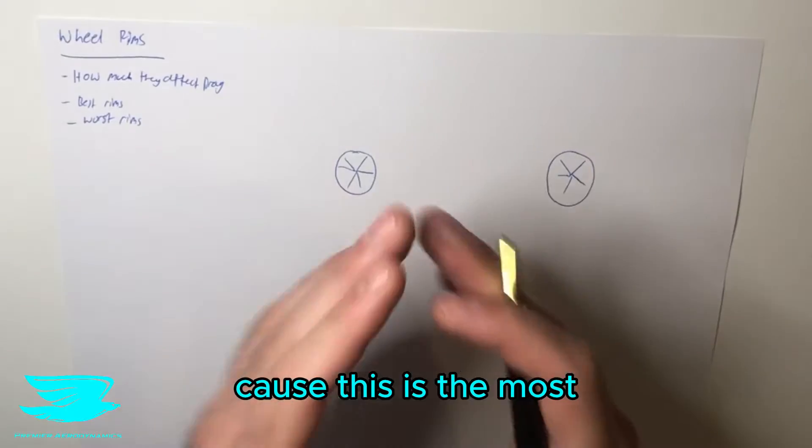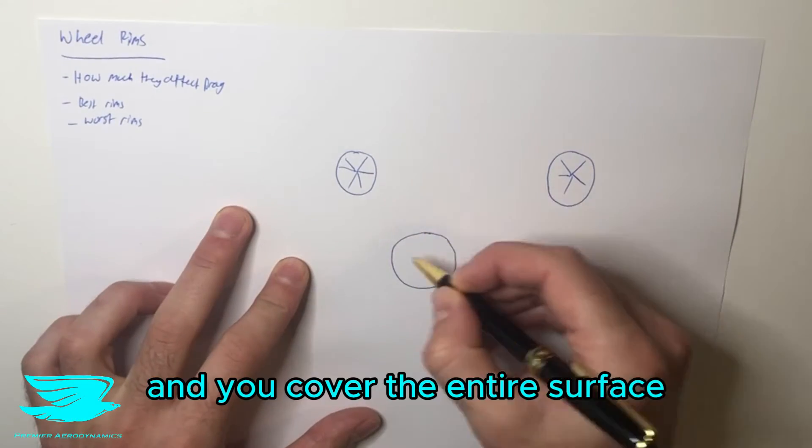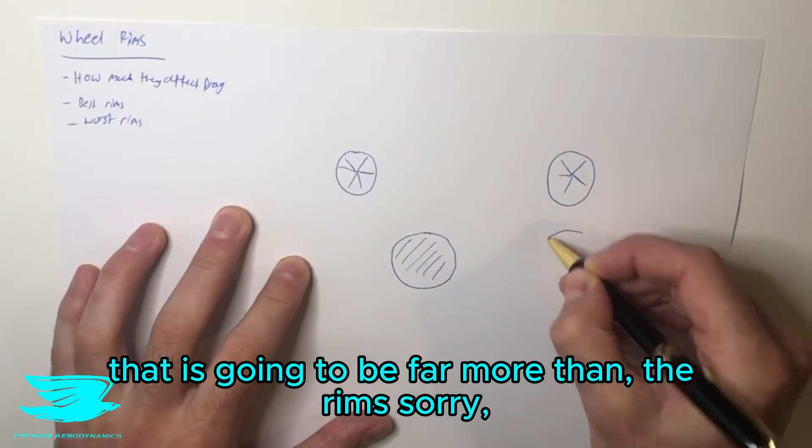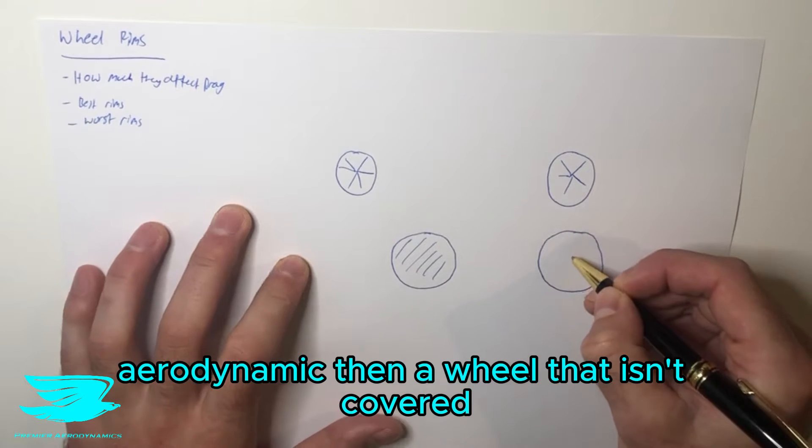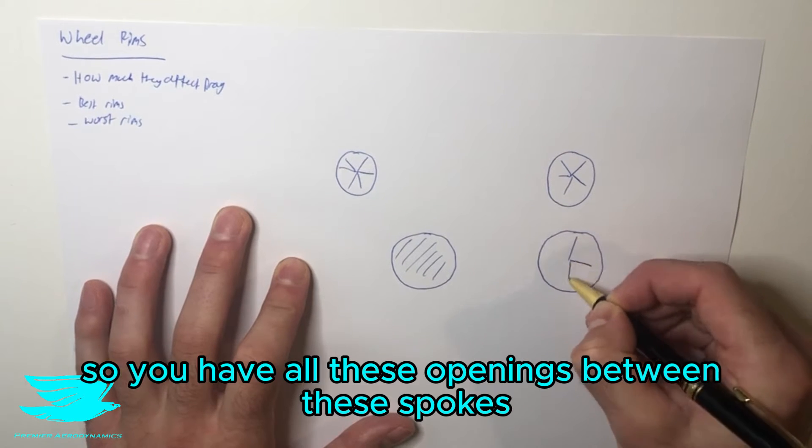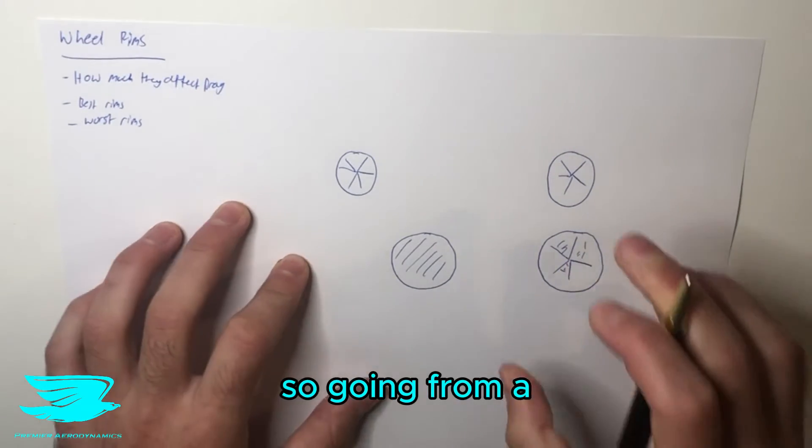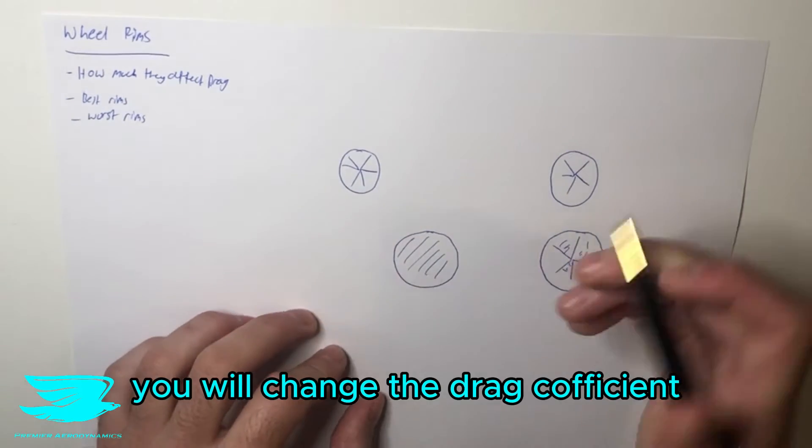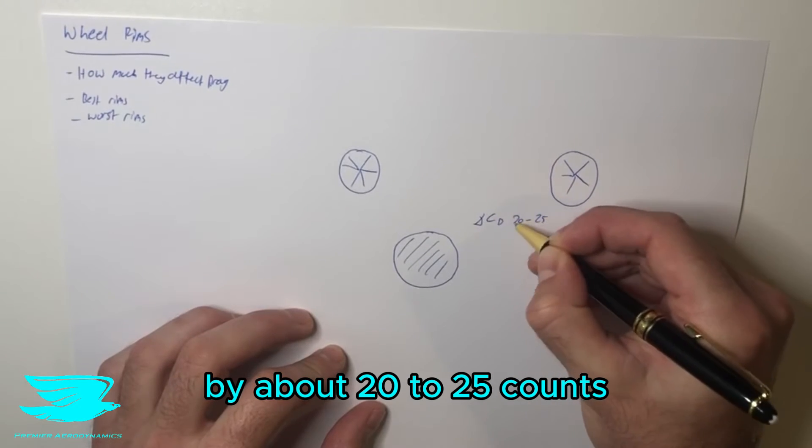First of all, the coverage area, because this is the most important parameter. So let's say you have one wheel and you cover the entire surface. That is going to be far more aerodynamic than a wheel that isn't covered, with all these openings between the rims. So going from a completely open wheel to a completely closed wheel, you will change the drag coefficient by about 20 to 25 counts.